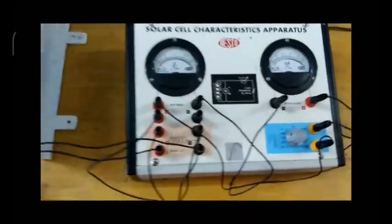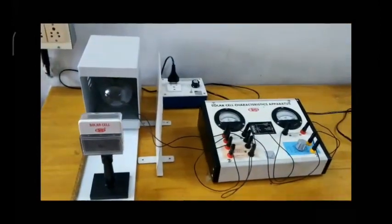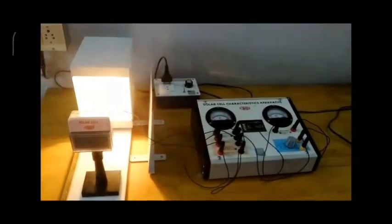So let's see how to draw the IV characteristics. First, switch on the light source and adjust the intensity to maximum value by rotating this knob.